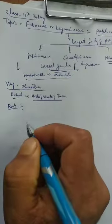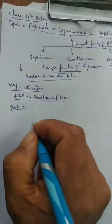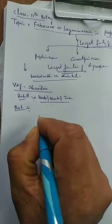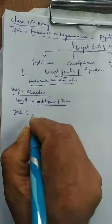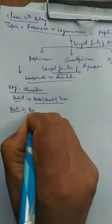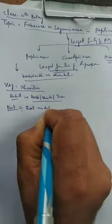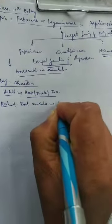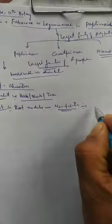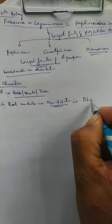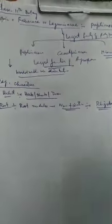The first vegetative character is the root. The characteristic feature of the roots in Leguminaceae is the presence of root nodules. This family is characterized by root nodules which help in nitrogen fixation by forming a symbiotic association with bacteria like Rhizobium.